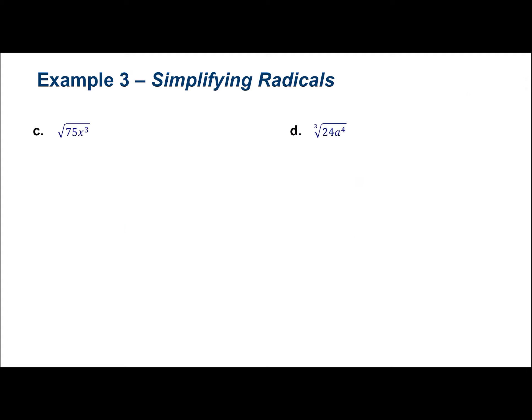Part C is the square root of 75x cubed. Start with just the number: simplify the square root of 75. Looking at our perfect squares, 25 goes into 75 three times — 25 times 3 is 75. So the square root of 25 times the square root of 3 gives us 5 radical 3 for the number part.